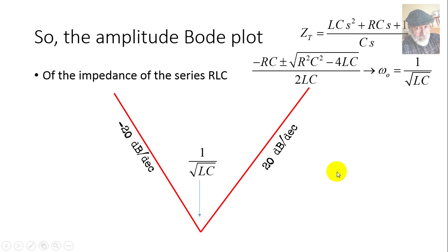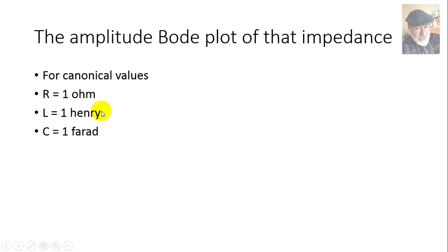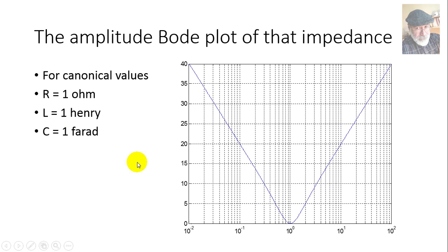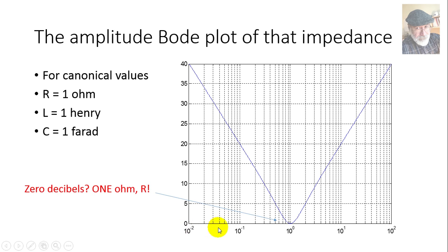Let's plot this for specific unit values: R = 1 Ω, L = 1 H, and C = 1 F — a canonical filter. The impedance has a decaying value that reaches a minimum at 1 radian per second, which is 1/√(LC) = 1. At that frequency, the impedance value is 0 dB, meaning 1 Ω. So the minimum value of the impedance is the resistance value — 1 Ω, or 0 dB.